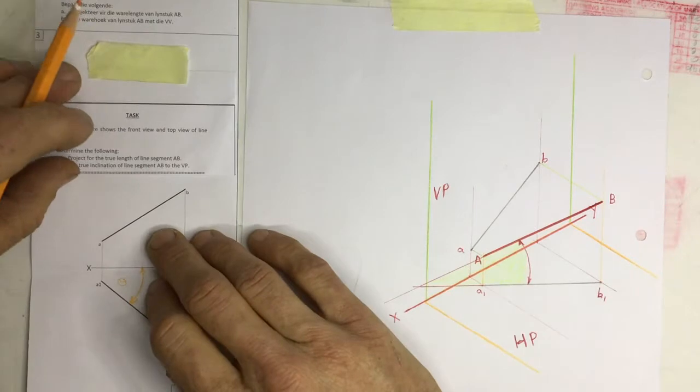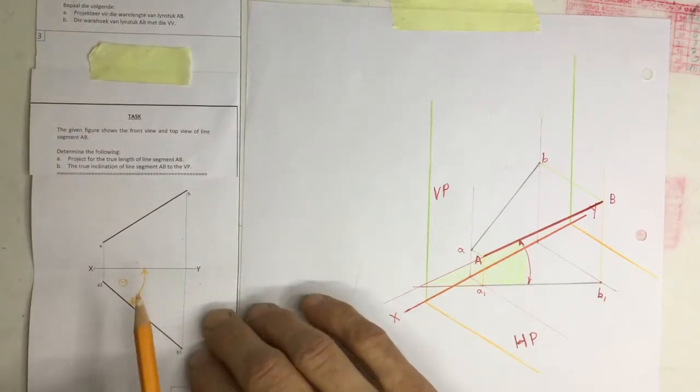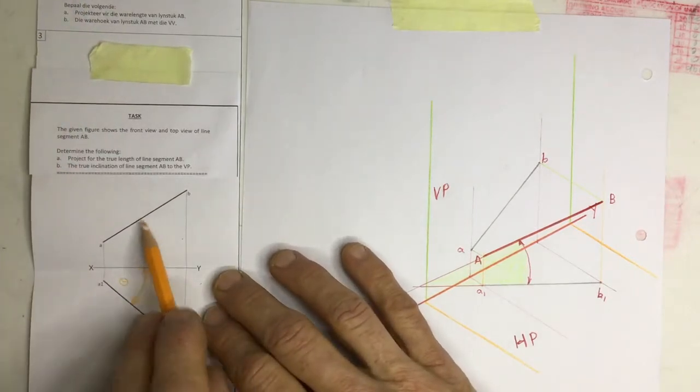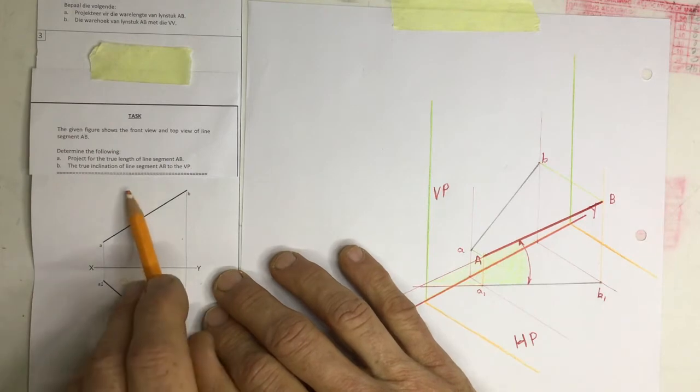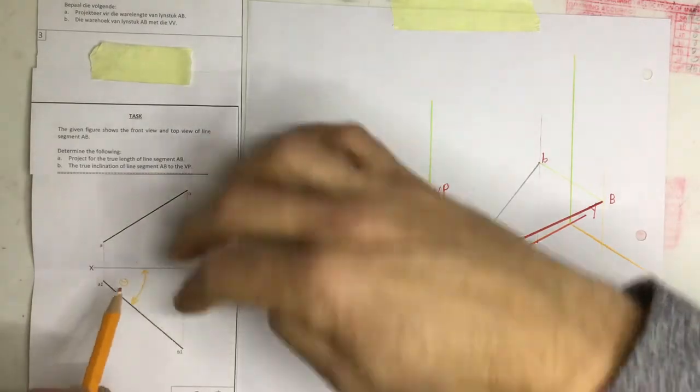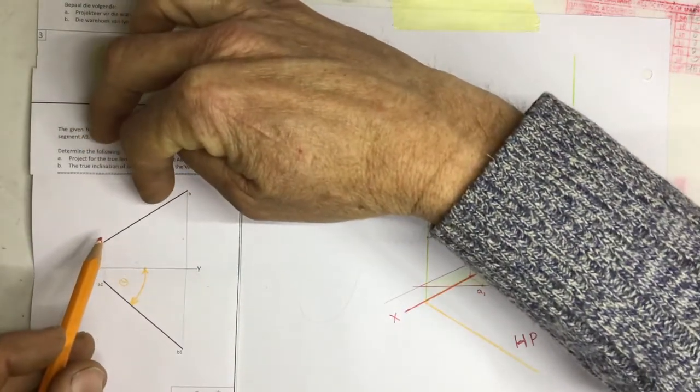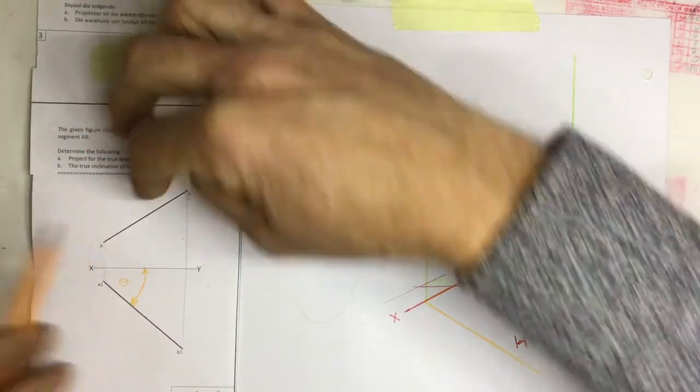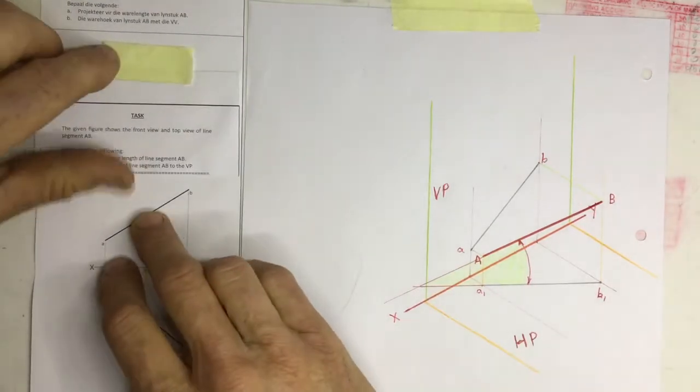What we need to do is to be able to look at this line segment at 90 degrees. And using the information from this horizontal plane, I will then be able to get the true angle of inclination to the vertical plane. So how do I go about doing that?